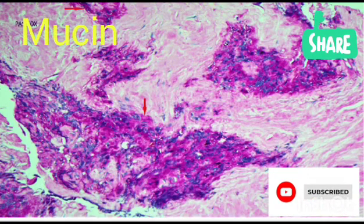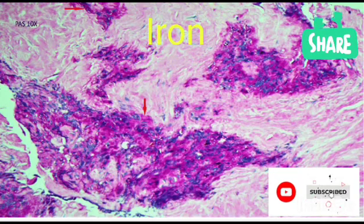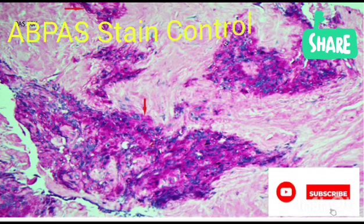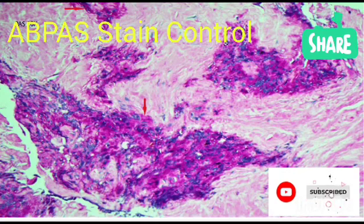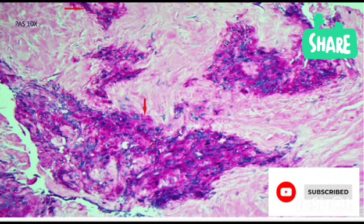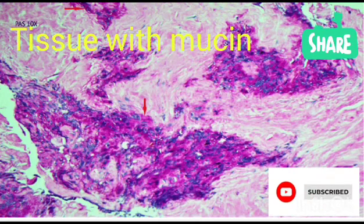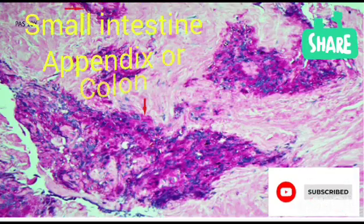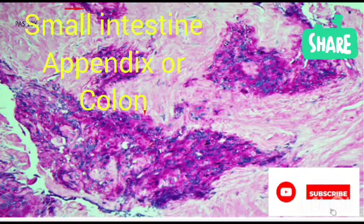So in this case, for Alcian Blue PAS control, the controls we use are tissues that have mucin in them. We can't use samples from the liver or from the kidney. We have to look for tissues that have mucin in them to help us confirm if there is actually mucin in the suspected case we are looking at. So we use the small intestine, we use appendix, or we use colon.